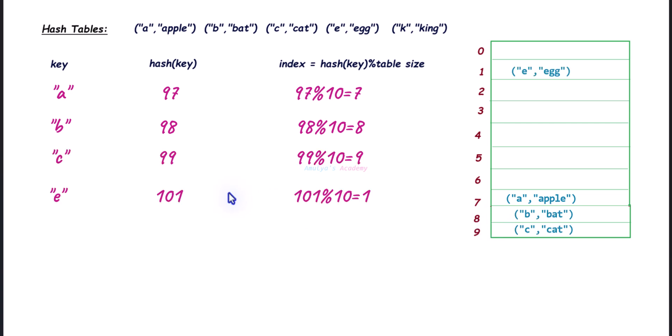For 'c', 'e', and 'k', when we compute the index for 'k', we get index 7 — but index 7 is already occupied. This key-value pair is already present at index 7. This situation, where two different keys hash to the same index, is called a collision.